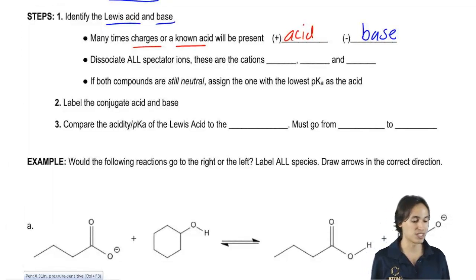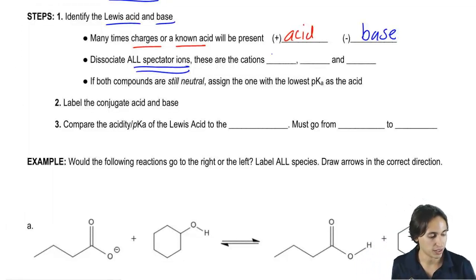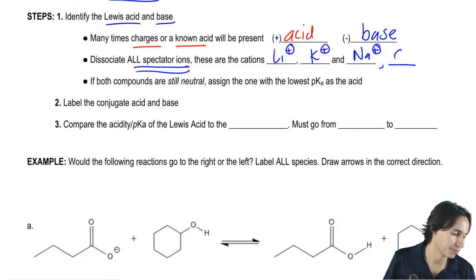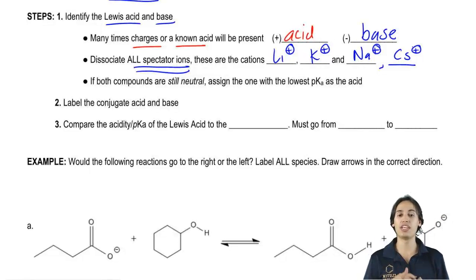But sometimes you're not going to have a negative charge and you're not going to have a positive charge. So if you don't, then you go to the second step. The second step is to make sure that all spectator ions are dissociated. Do you guys remember spectator ions from GenChem? Those were just your first column cations. So that would be lithium positive, potassium positive, and sodium positive. Now some professors even go as far as to add cesium. These are cations that always dissociate in solution. So these basically make ionic bonds.